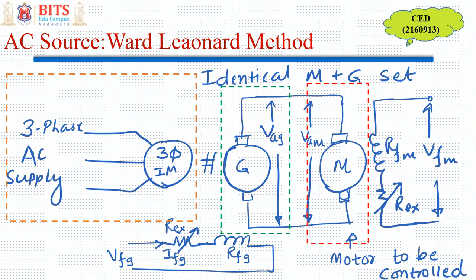This generator is driven by a three-phase induction motor using a three-phase normal AC supply, so it is a constant speed machine running the generator. The excitation of the generator is varied to change the output voltage VAG, which acts as the armature voltage input VAM to the motor. So by varying the excitation of the generator, I can vary the armature voltage — this is how armature voltage control is achieved.